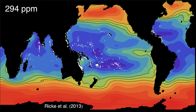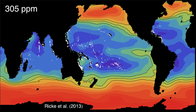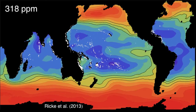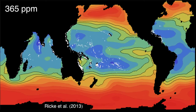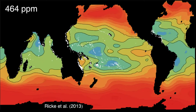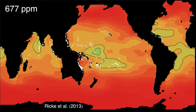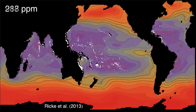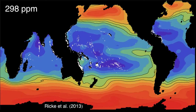This animation shows the ensemble median saturation of aragonite, the form of calcium carbonate corals use to build their skeletons, in the ocean for the CMIP-5 Earth System models. The animation starts around 1860 and projects aragonite saturations out to year 2100 under a business-as-usual scenario, RCP-8.5.